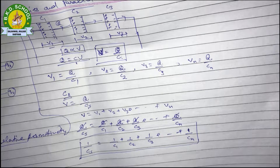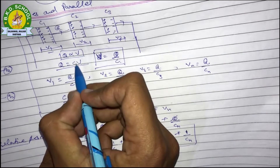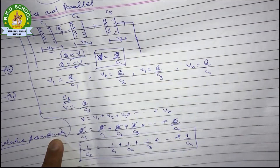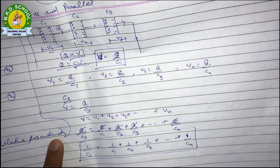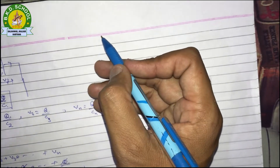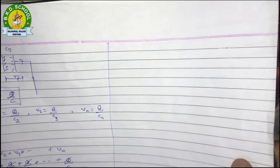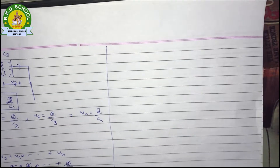For the parallel combination, the potential value is always the same across each element, but the charge flowing through each branch will have a different magnitude. We find the charge value using the same formula. Just as you did the parallel combination for resistance, and the series combination for capacitance, you can solve the parallel case similarly — there will be no difficulty.